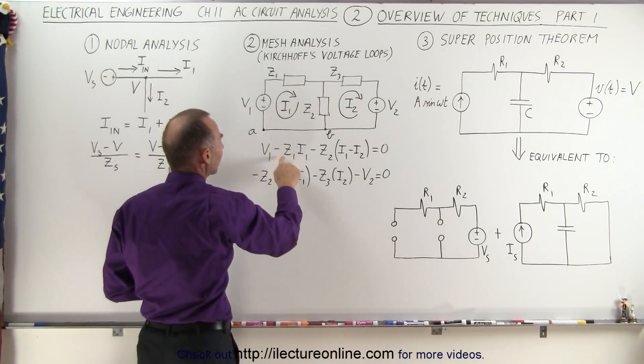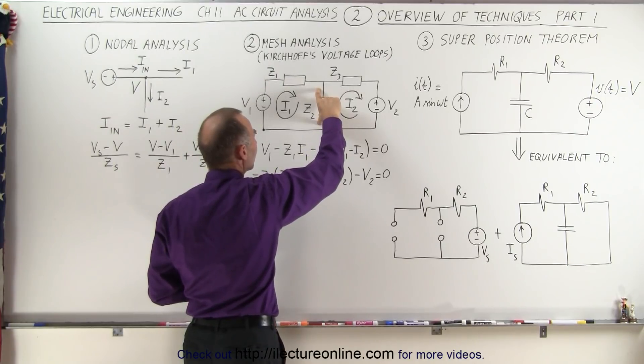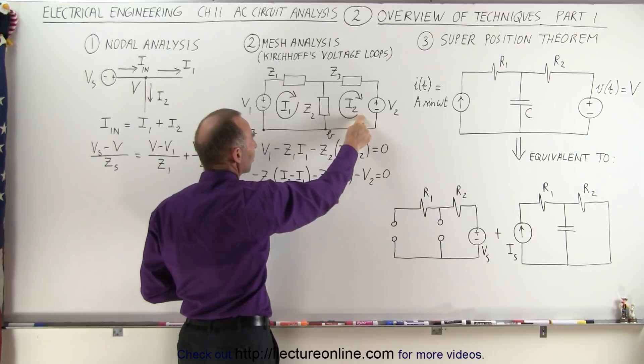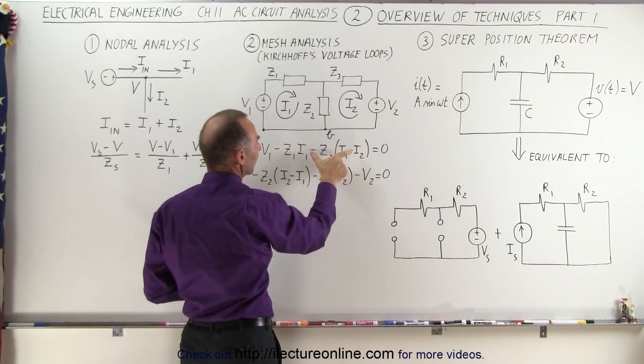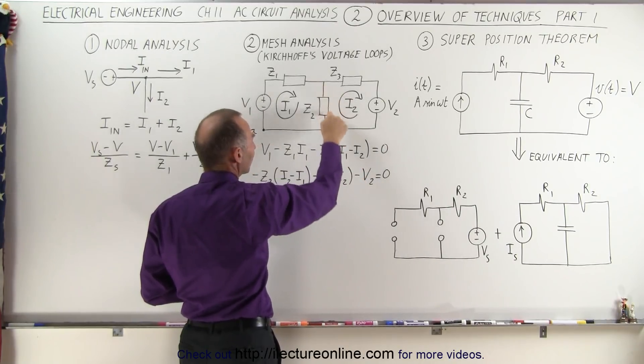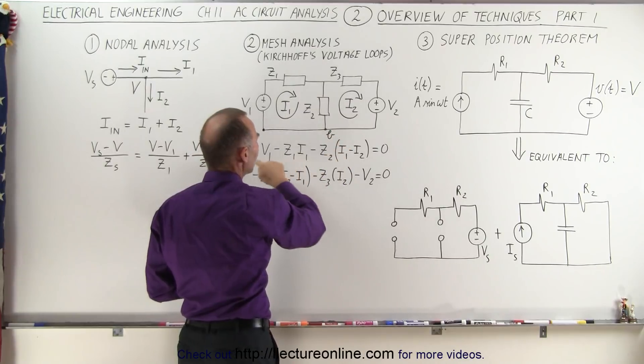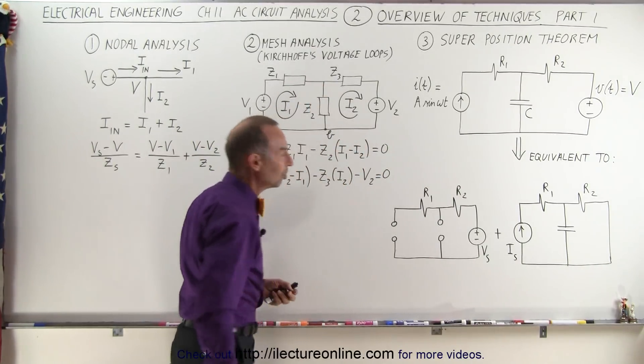Then we go across this impedance right here. We have a drop because of current I1, but a rise because of current I2, so it's minus Z2I1 and minus times minus becomes plus Z2I2 across this particular impedance. When we complete the whole loop, we can see that when we do this mesh analysis of the first mesh, that adds up to zero.